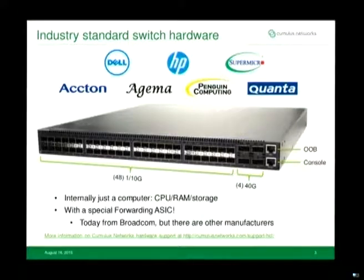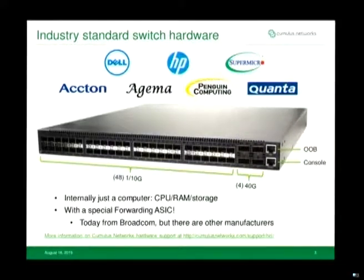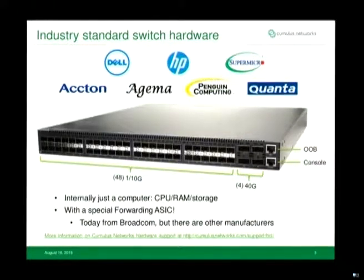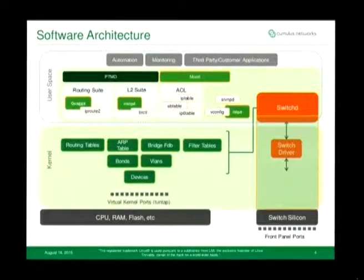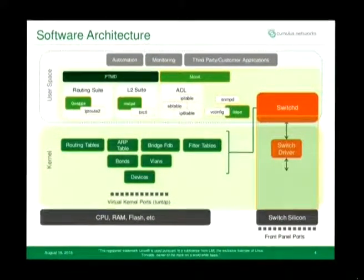The only thing unusual about them is that they have a really big ASIC right in the middle that's PCI Express attached to the CPU. That is the piece that connects to all those front panel ports. This one has 48 10-gig ports and four 40-gig ports, which is a lot of networking capacity to plug into a server. So there's a special ASIC that handles all the networking functionality in hardware. There's a TUN/TAP device created for each front panel port, connected behind the scenes to the actual front panel port for handling traffic to and from the CPU.